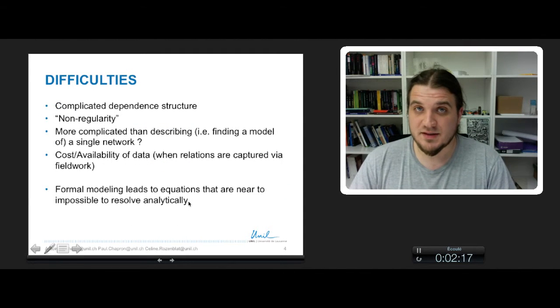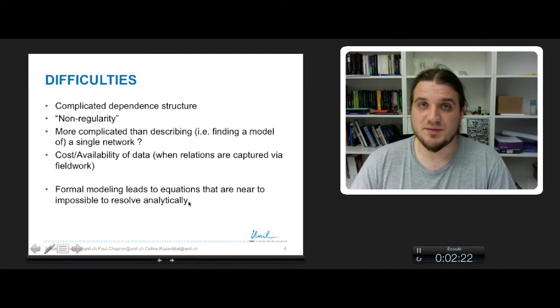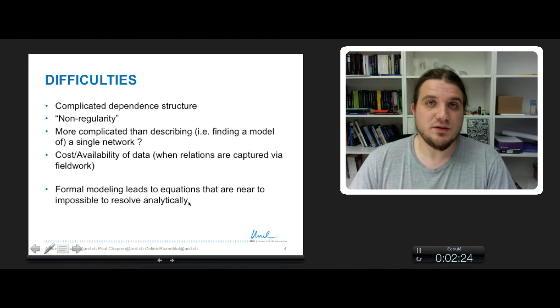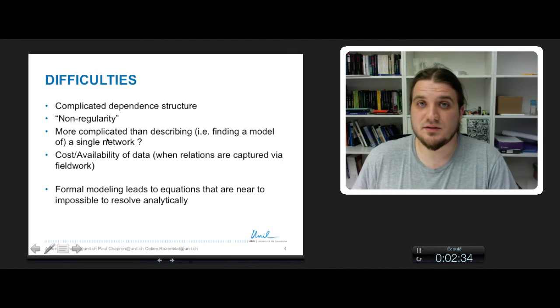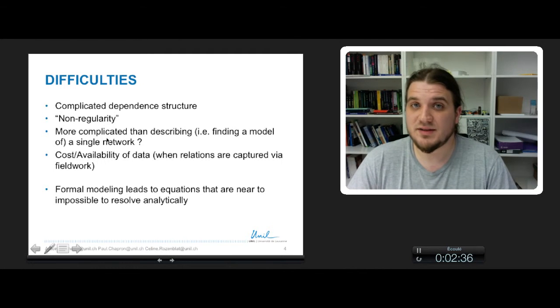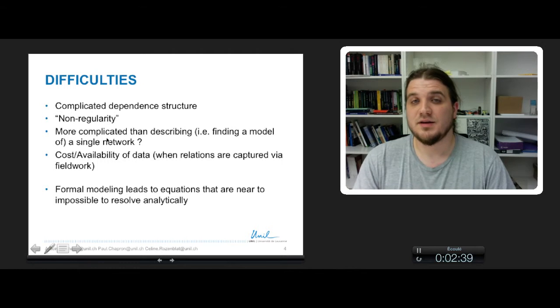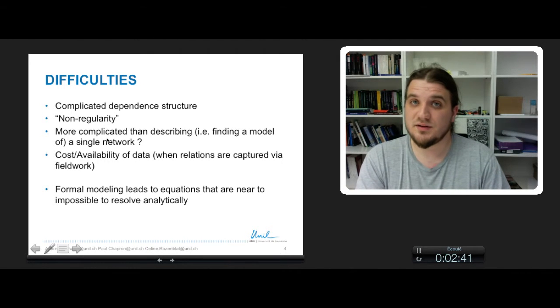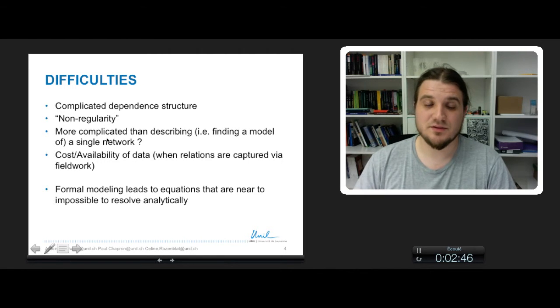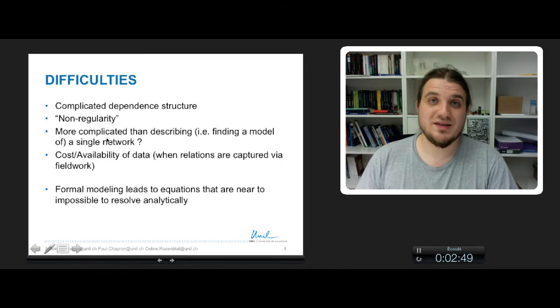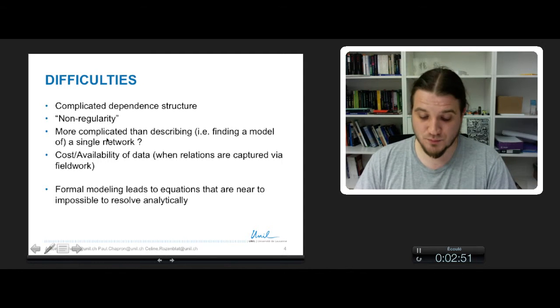There are some difficulties that are inherent to the network data with several observations in time. You already know that network data is complicated because of a dependent structure and everything is related to everything else. There is always a non-regularity of your data, so your data is never purely random or purely regular like trees and lattices. So data is always in between the two easy networks to model.